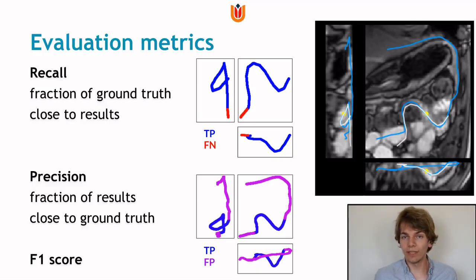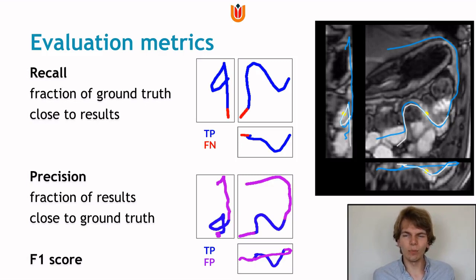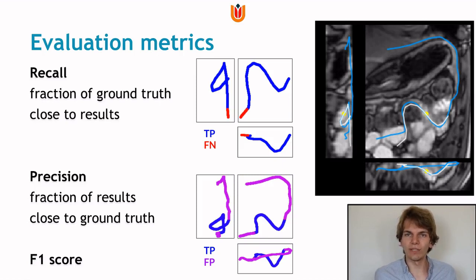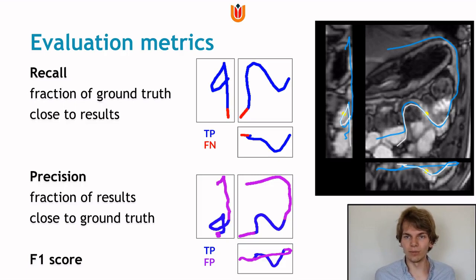We can compute some quantitative accuracy measures. To define true and false positives, we use a maximum distance threshold of 10 mm to determine whether our predicted lines are close enough to the ground truth to be considered correct — and 10 mm is a typical small intestine radius. Using this measure, we compute a recall metric indicating how much of the ground truth was discovered by the automatic prediction, and a precision metric indicating how much of the prediction is actually close to the ground truth. As an example, here is a result from the non-stochastic tracker with high recall because most of the ground truth was discovered, but very low precision. We also compute an F1 score — which you may know as the Dice score — the harmonic mean between recall and precision.